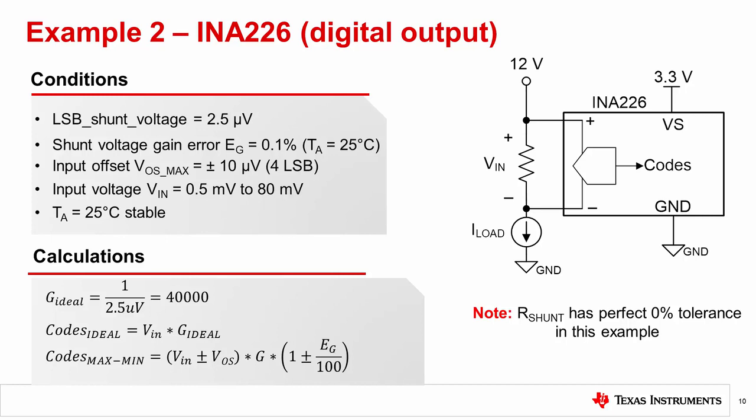For calculations, the gain is simply the inverse of the shunt voltage least significant bit. Since gain error is the same over the entire range, we can multiply the ideal shunt voltage by the gain and the gain error factor to determine the maximum and minimum worst case codes.